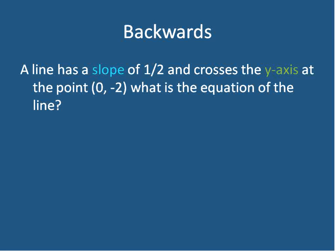Let's look at it backwards. If a line has a slope of 1 half and it crosses the y-axis at the point 0, negative 2, what is the equation for that line? Well, I know that y is equal to my slope times x plus my y-intercept, b. So I can write this equation as y equals 1 half, my slope of 1 half, x minus 2, right? Because it crosses at the point 0, negative 2. Negative 2 is my y-intercept.